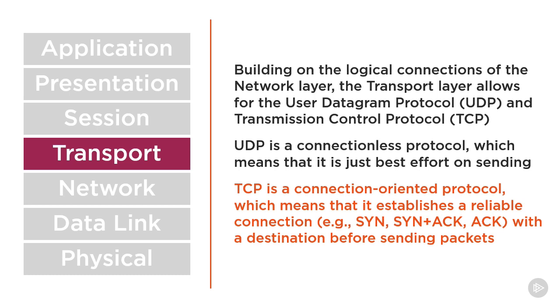The three-way handshake of the TCP protocol occurs at the beginning of a connection between two systems using the TCP protocol to establish a connection between each other before data is sent.